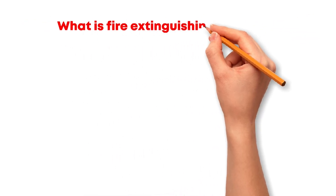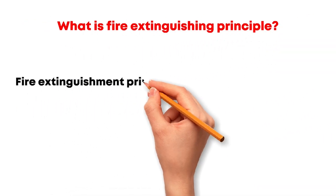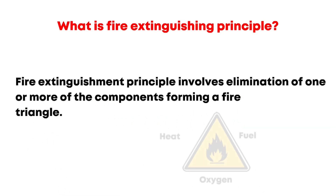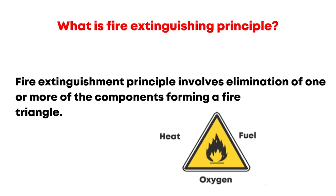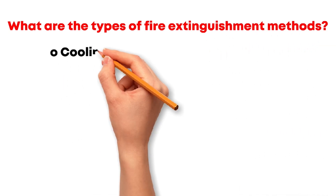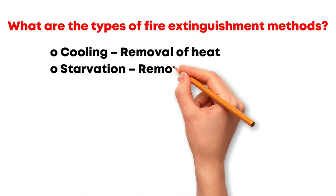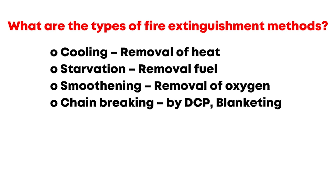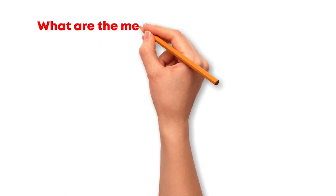What is the fire extinguishing principle? It involves eliminating one or more components forming a fire triangle. There are four main methods of fire extinguishment: cooling (removing heat), starvation (removing fuel), smothering (removing oxygen), and chain breaking using DCP or blanketing.